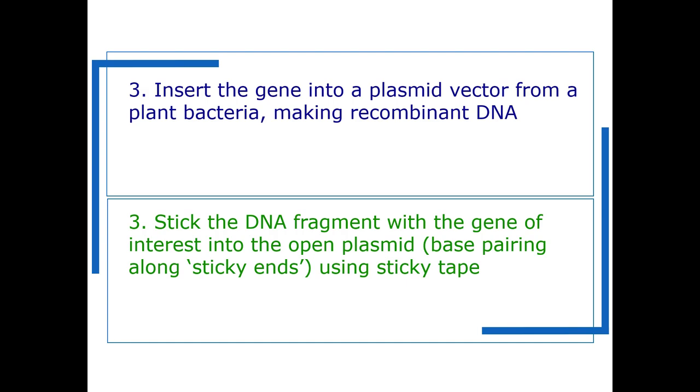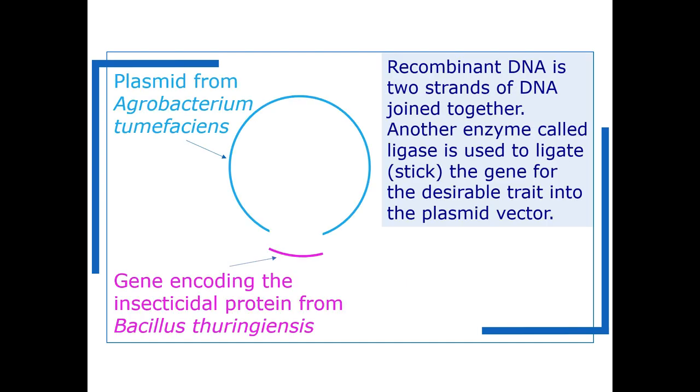The third step is then to insert the gene into a plasmid vector from a plant bacteria to make recombinant DNA. So we have a linearized plasmid from Agrobacterium tumefaciens and we have the gene encoding the insecticidal protein from Bacillus thuringiensis.